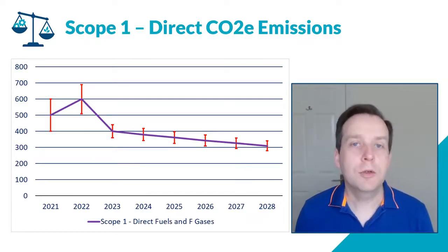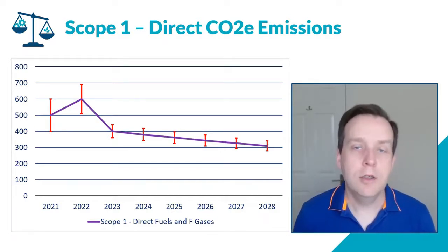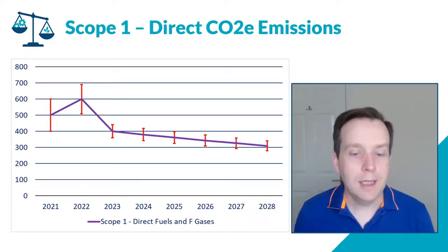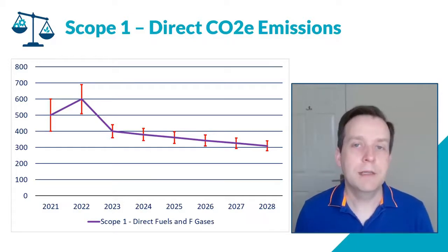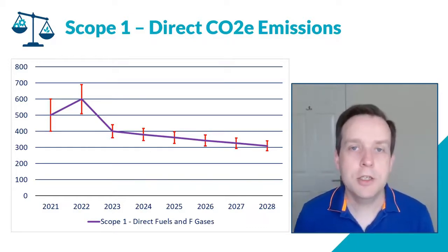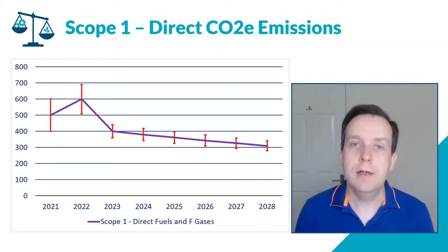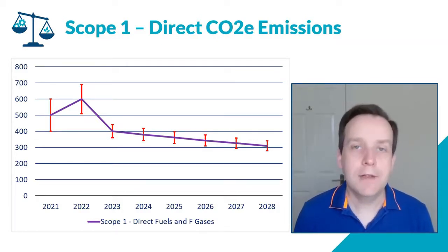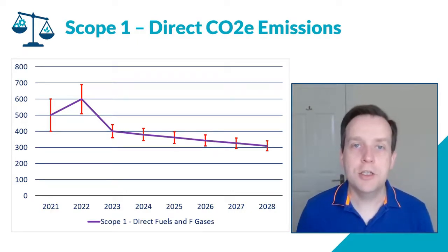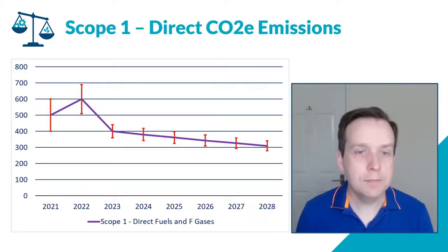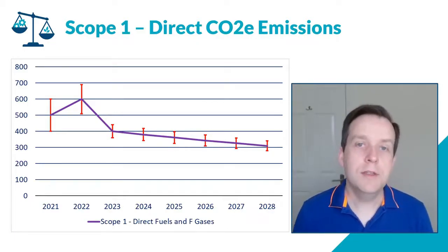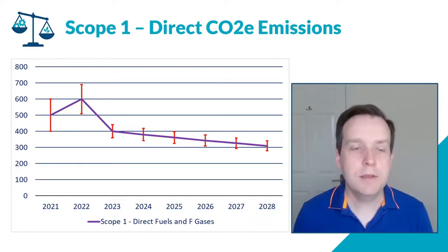For example, if you're a transport company, you should have a very detailed picture of how much diesel your vehicles are using. If you're a large hotel with multiple air conditioning units, you should have an F-gas register and know exactly how much F-gas is being used to top up your air conditioning or refrigeration on an annual basis.